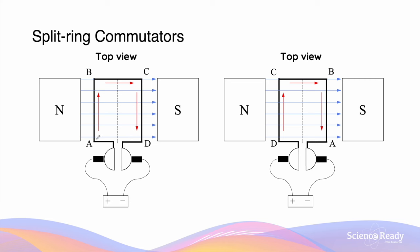If you focus on the actual letters: in the first diagram, when the commutator on side AB is in contact with the left brush, current goes from A to B and from C to D.